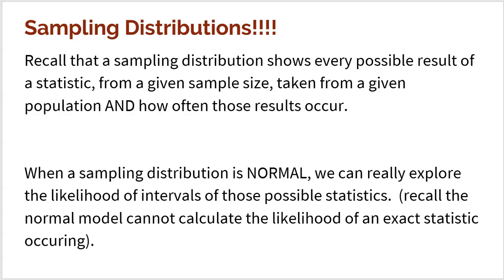Let's move on to what we just finished with in Unit 5: sampling distributions. Recall that a sampling distribution shows every possible result of a statistic from a given sample size taken from a population, and how often those results occur. When a sampling distribution is approximately normal, we can really explore the likelihood of intervals of those possible statistics — once we have that distribution in front of us and we know it's approximately normal because we checked all of our conditions.